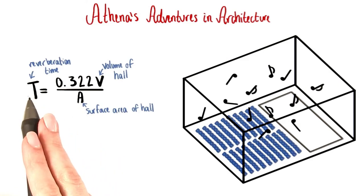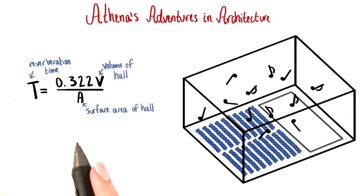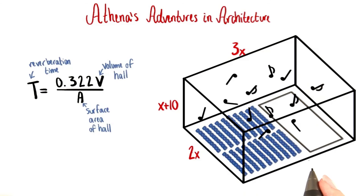So to figure out the reverberation time then, Athena is going to need to find the volume and the surface area of the room. On this diagram of the hall, I've written in the dimensions of each of the sides.